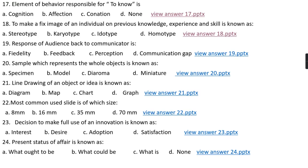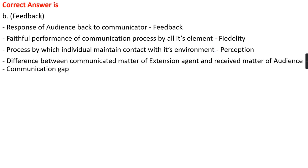Question number nineteen: Response of audience back to communicator is option A, fidelity; option B, feedback; option C, perception; option D, communication gap. The right answer is option B, that is feedback. Response of audience back to the communicator is known as feedback. Faithful performance of a communication process by all its elements — communicator, channel, and receiver — is known as fidelity. The process by which an individual maintains contact with its environment is known as perception. The difference between the communicated matter of the extension agent and the received matter of the audience is known as the communication gap.